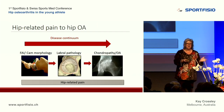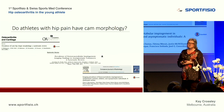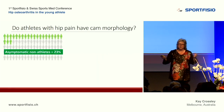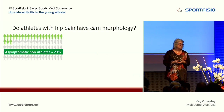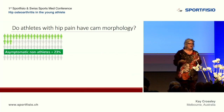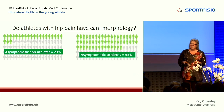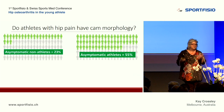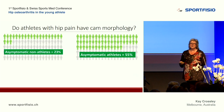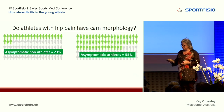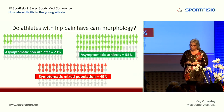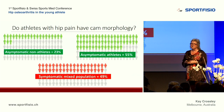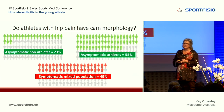To answer the question of whether athletes with hip pain have CAM morphology, several systematic reviews show that about a quarter of asymptomatic people in the general population have CAM morphology on x-ray. In asymptomatic athletes participating in sport, more than double that number have CAM morphology — more than half of asymptomatic athletes have CAM morphology. The prevalence of CAM morphology in people with symptoms is roughly the same as in asymptomatic athletes.